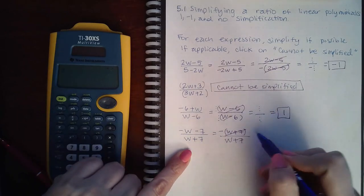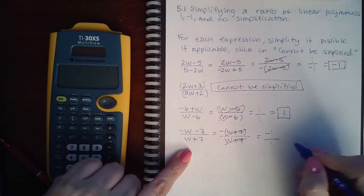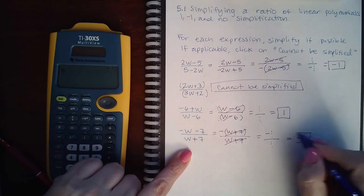This will cancel with this, leaving me with a negative invisible one over invisible one, so the result is negative 1.